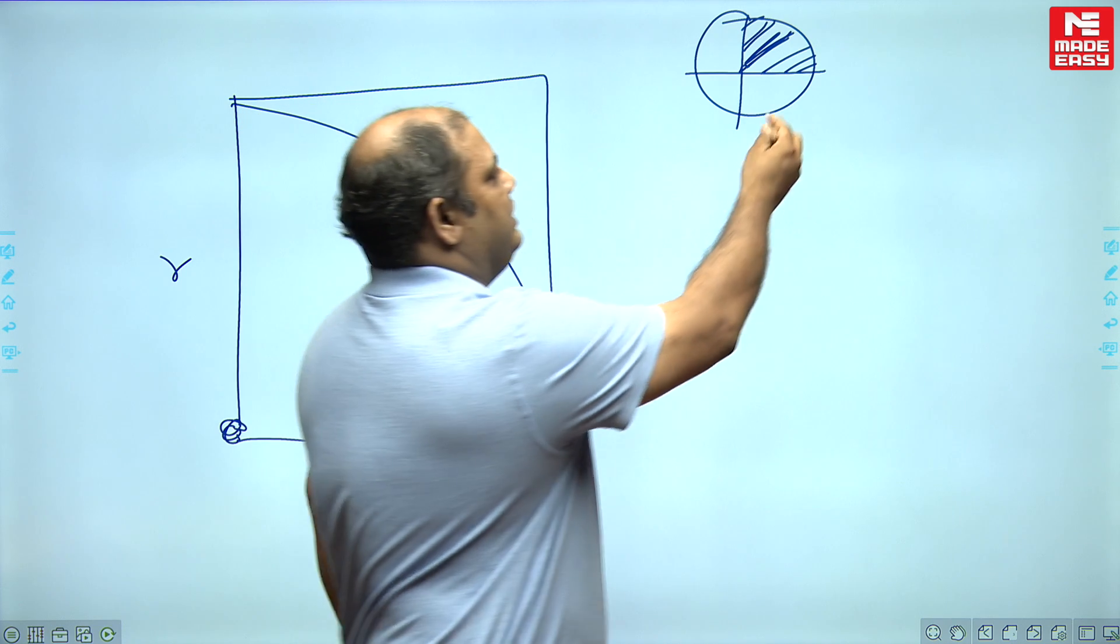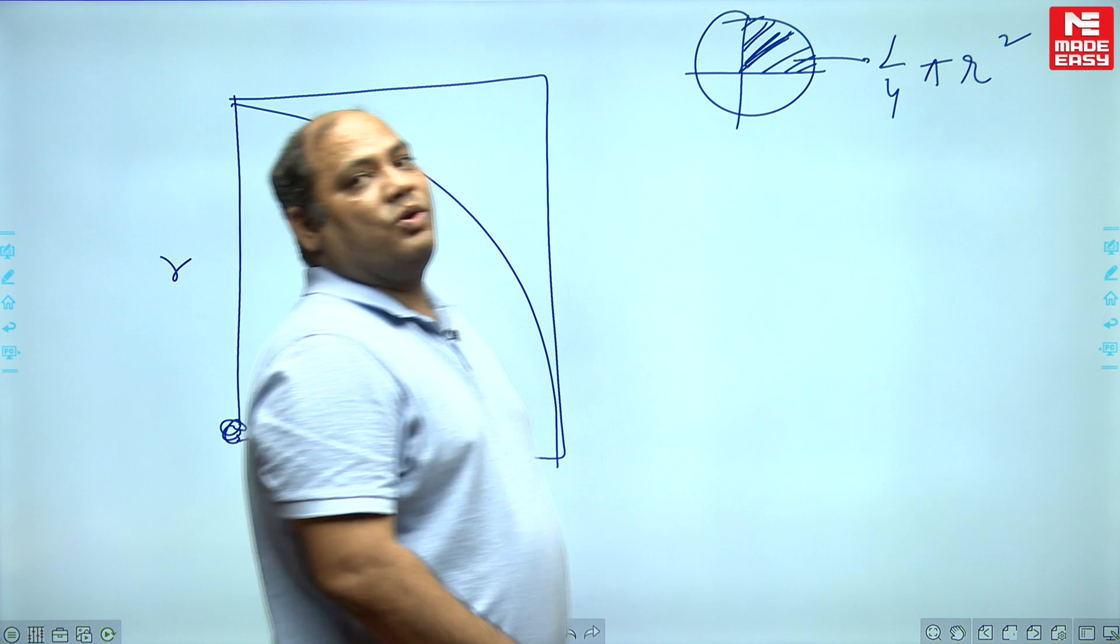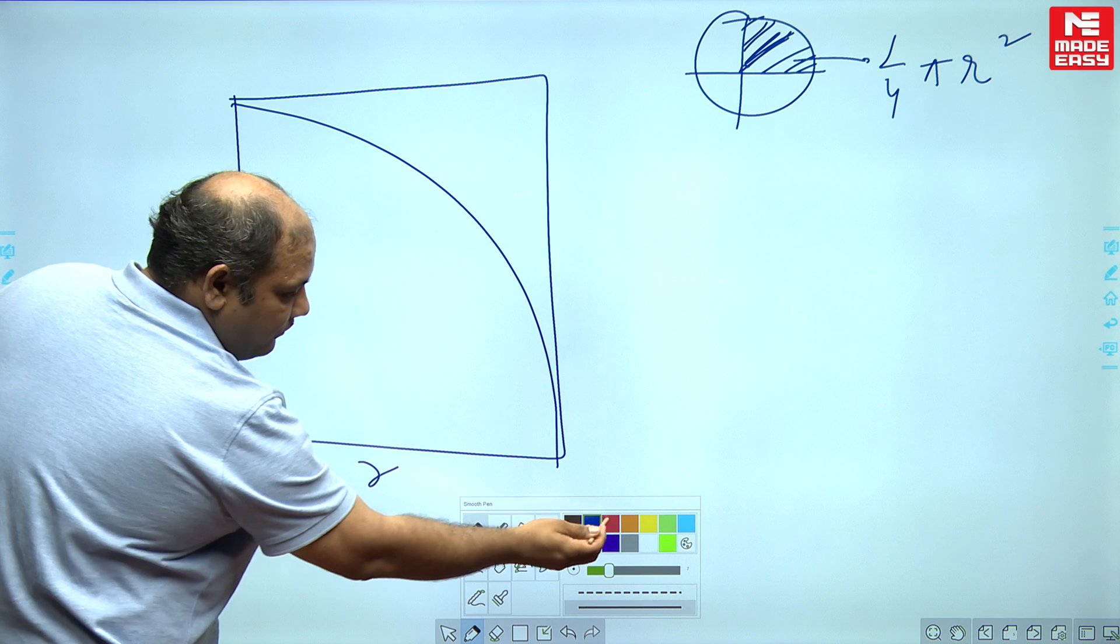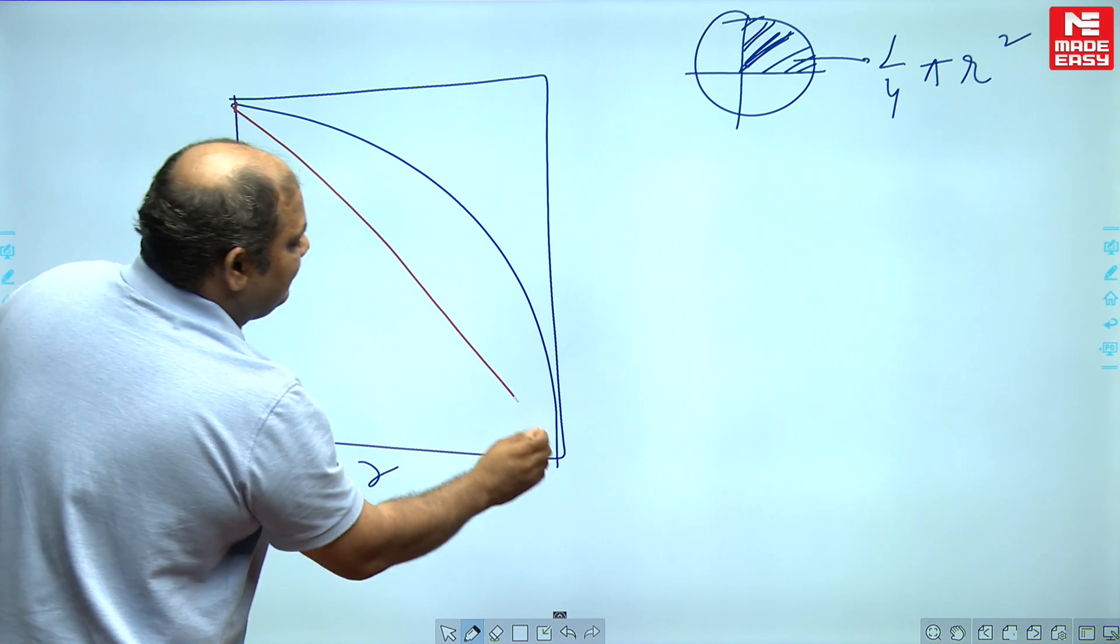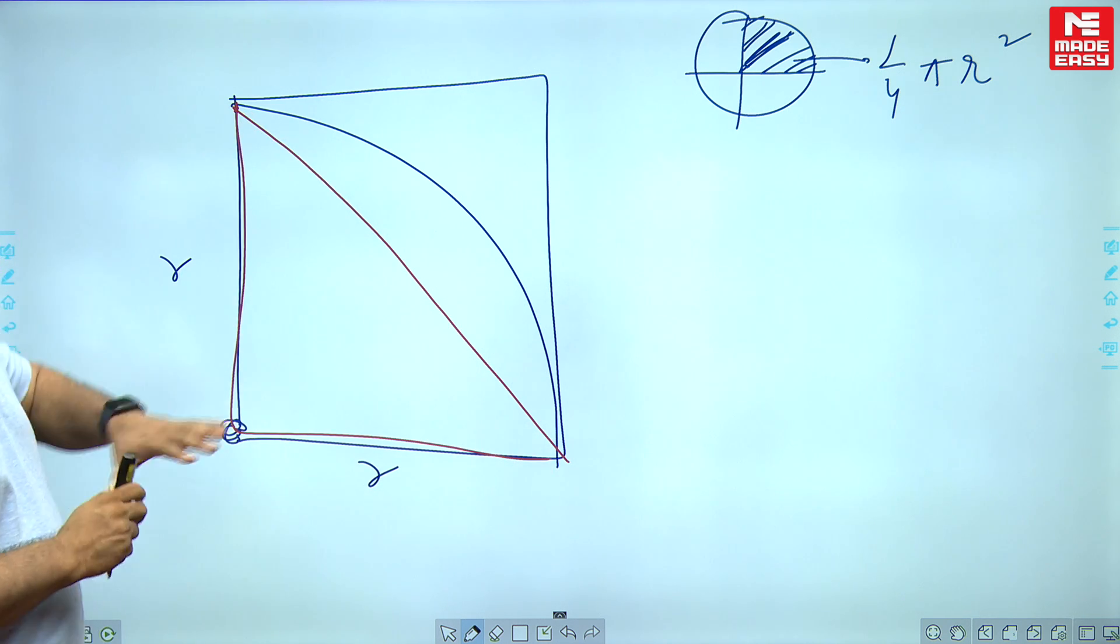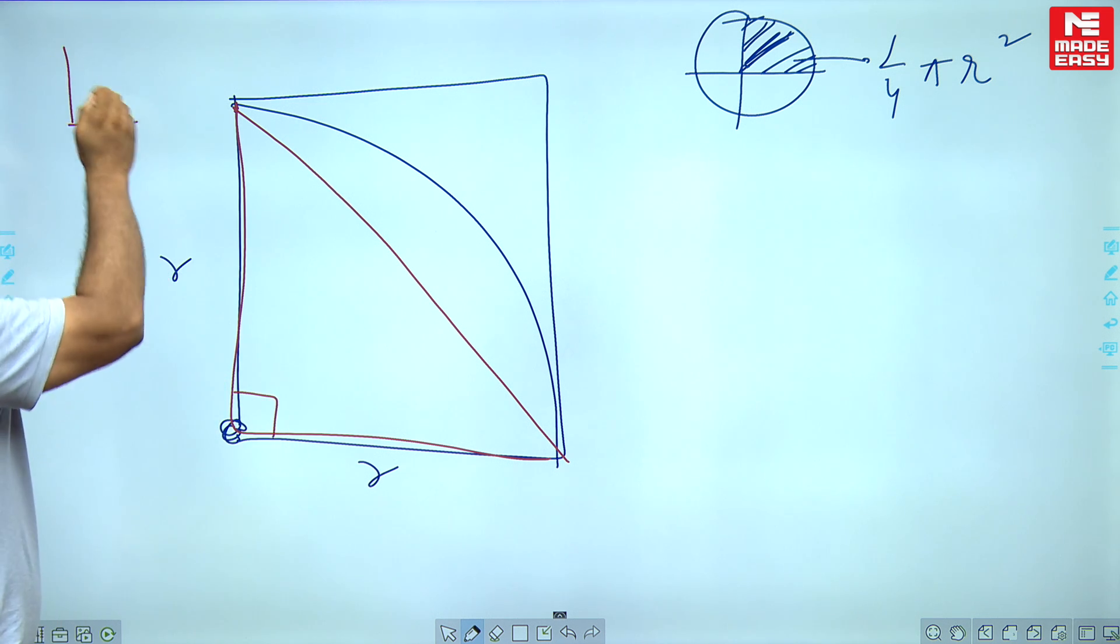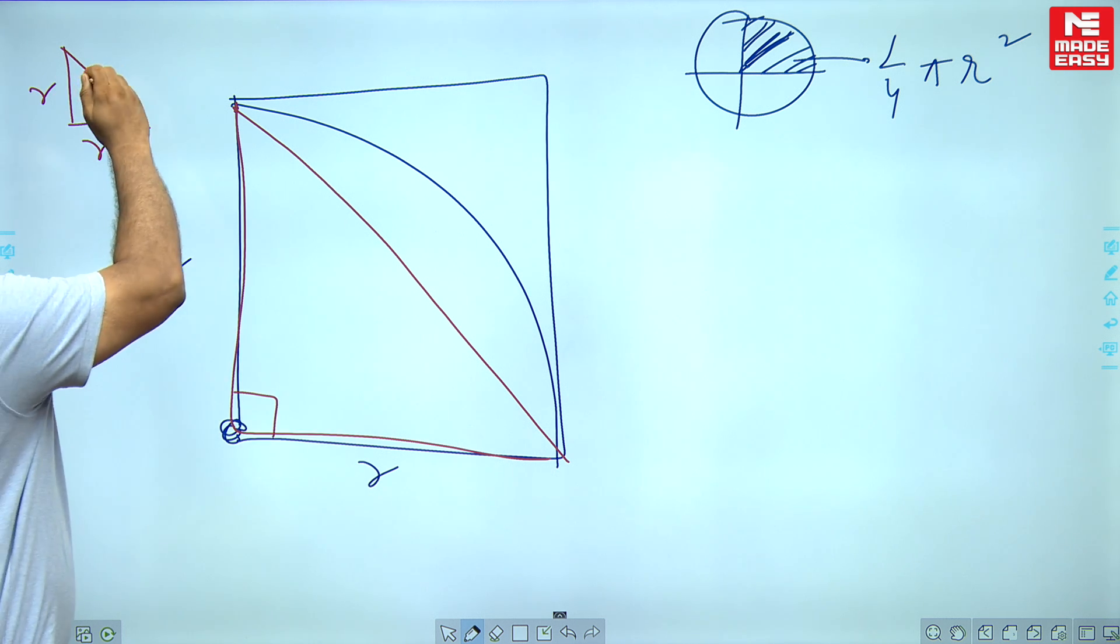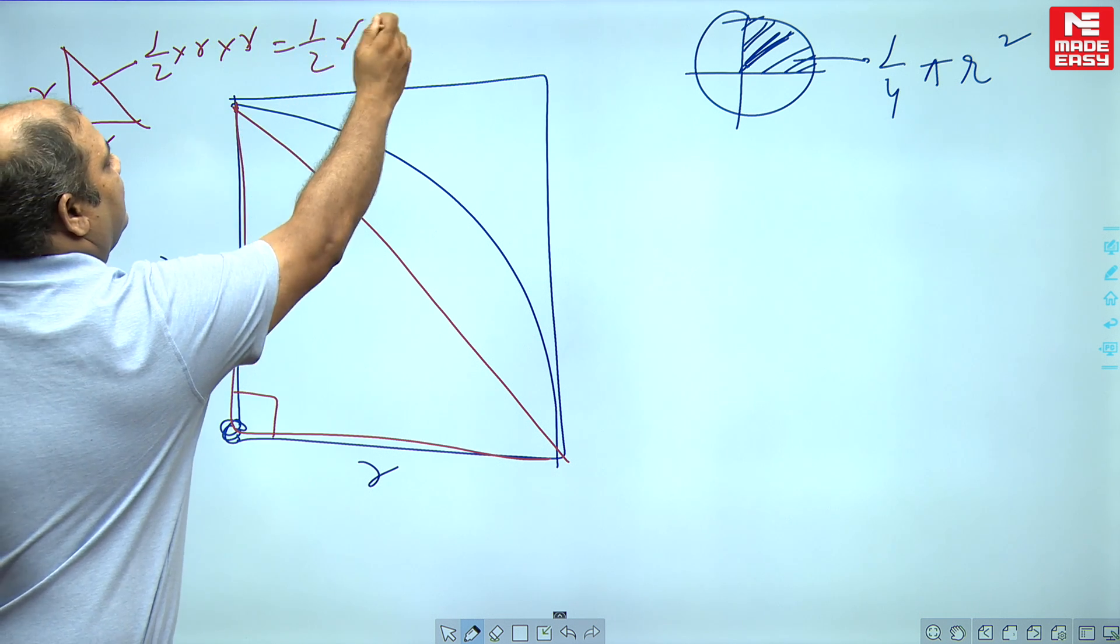From the quadrant of a circle, if I subtract half of the square which is basically a triangle, a right angle triangle where the base is R and height is R, the area will be half of base into height, which is half of R square.